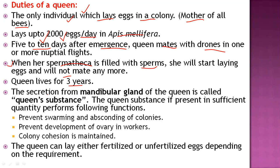A major function of the queen is her mandibular gland, which produces a secretion called the queen substance. This queen substance is very important in the bee colony because it performs various functions, including preventing swarming and absconding of the colony.